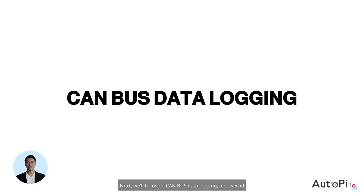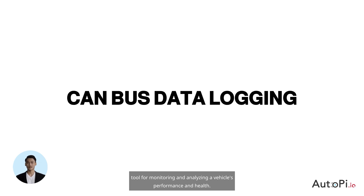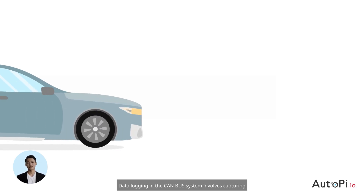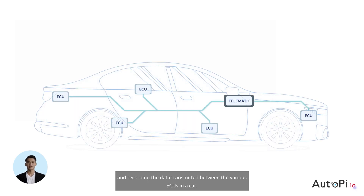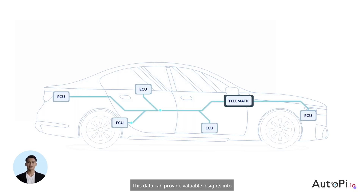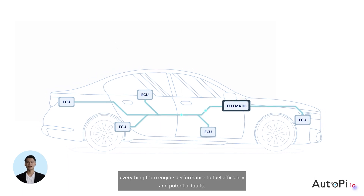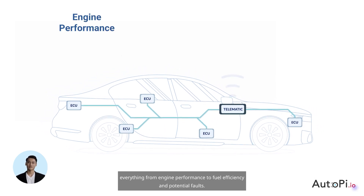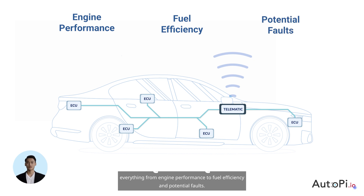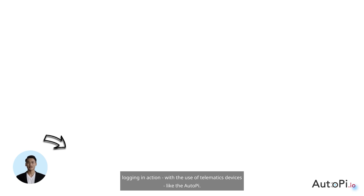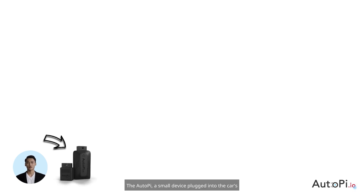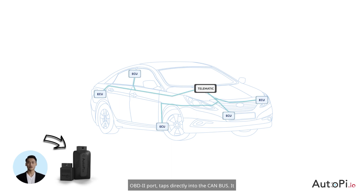Next, let's focus on CAN bus data logging — a powerful tool for monitoring and analyzing a vehicle's performance and health. Data logging in the CAN bus system involves capturing and recording the data transmitted between the various ECUs in a car. This data can provide valuable insights into everything from engine performance to fuel efficiency and potential faults. Let's look at a real-world example with the use of telematics devices, like the AutoPi.